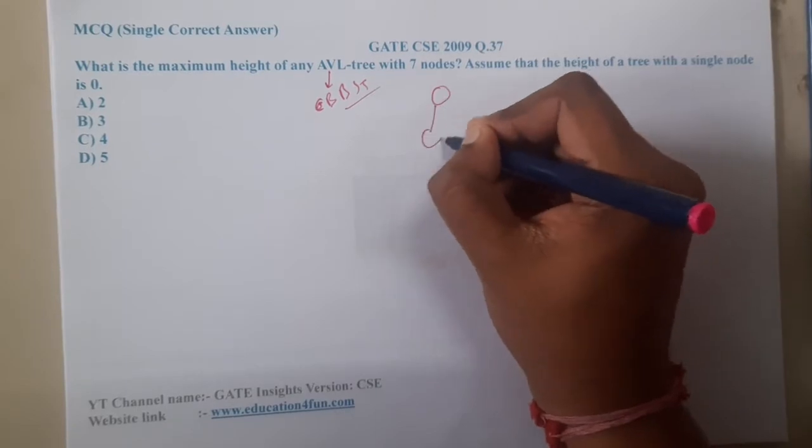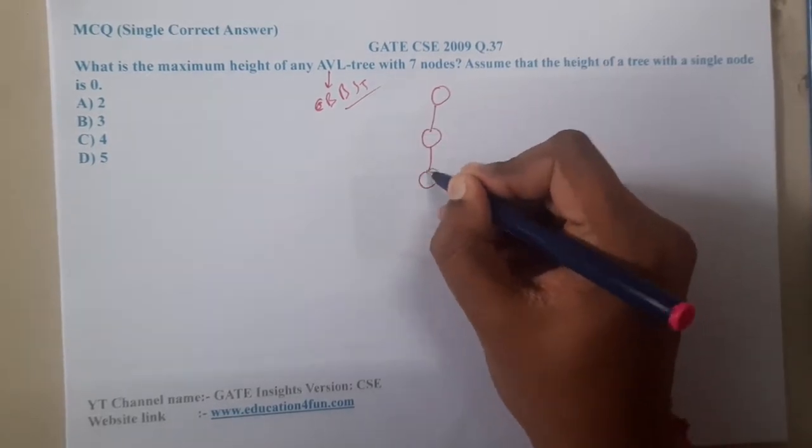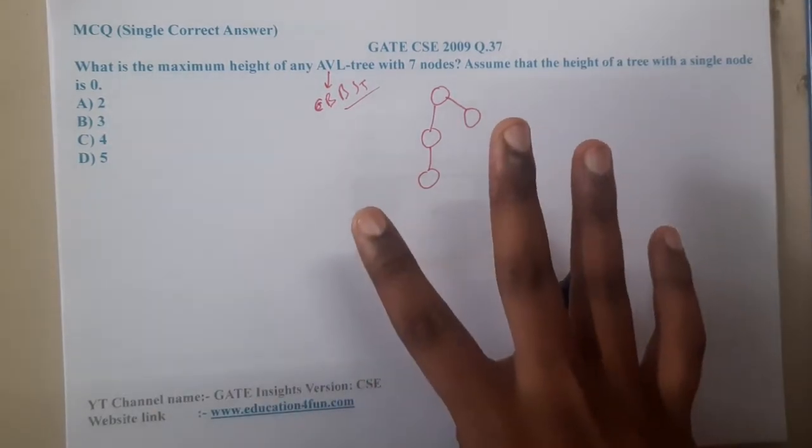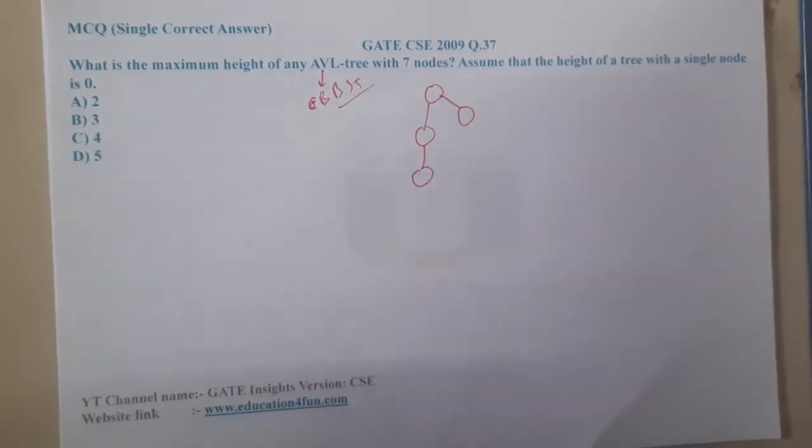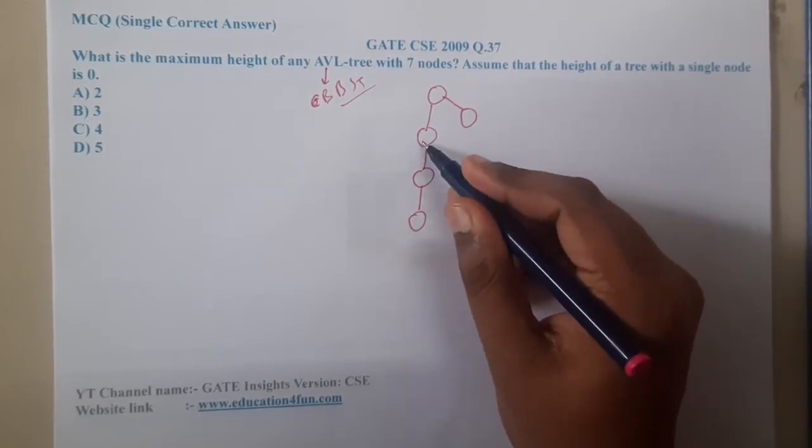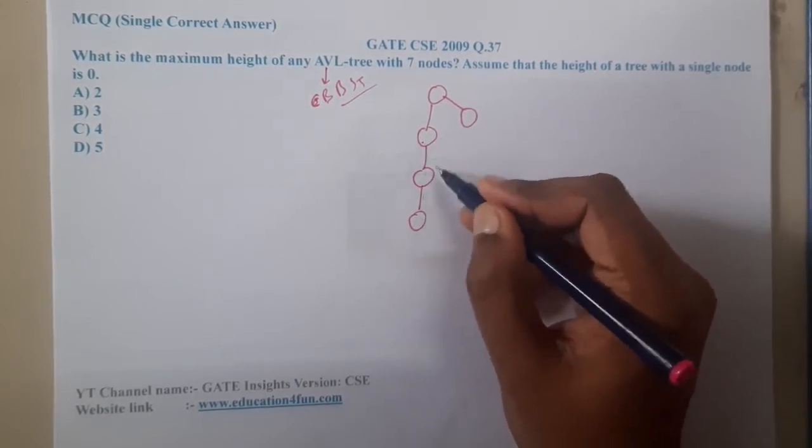Now we have seven nodes, so let us start inserting them. Insert one more, so we are done with four insertions. Let us try to insert one more here. Once you insert, where will the issue come? Here we'll be getting an issue of imbalance.